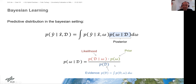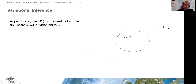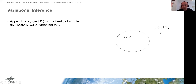So this Bayesian setting is very nice but we have two integrals which are very hard to compute. To do it a little bit simpler, I will show a method called variational inference. Variational inference methods are at the moment the most popular for uncertainty estimation in neural networks. There, you approximate the posterior — which we cannot compute — with a family of simple distributions called q_θ, specified by θ.